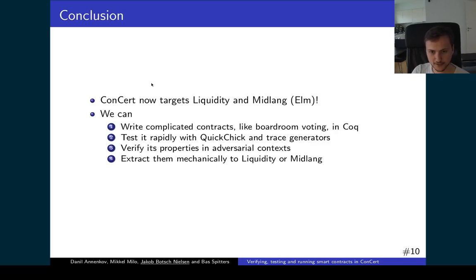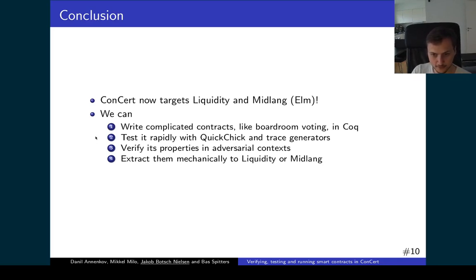To conclude: we can now target Liquidity and midlang from ConCert, which means you can write a complicated contract such as boardroom voting directly inside Coq, and can even use refinement types. Using QuickChick you can test it rapidly and convince yourself that the property holds by seeing that no counterexample was found. Once you have done this you can formally prove that the property does hold using the execution model formalized in ConCert. Finally, you can use the extraction we have to mechanically extract to Liquidity and midlang and get a contract that runs on an actual blockchain.